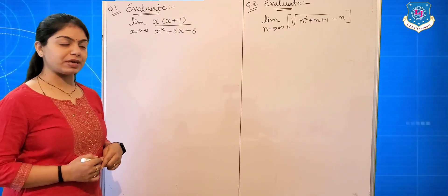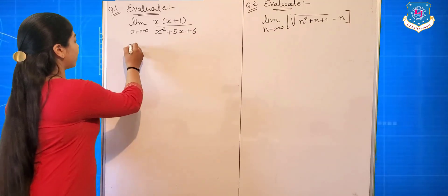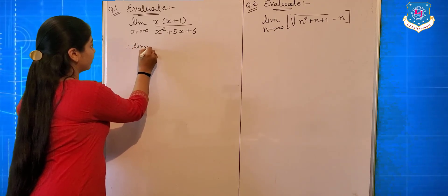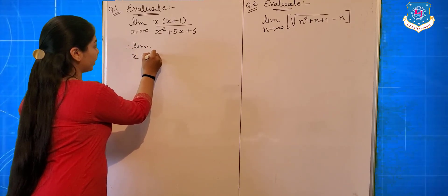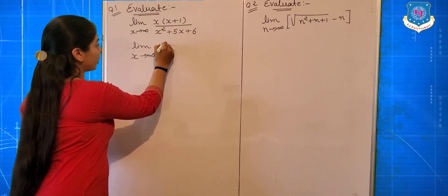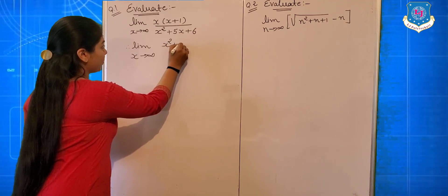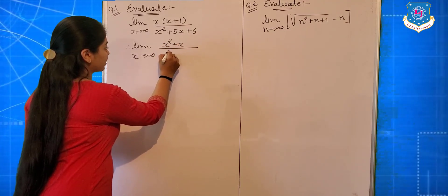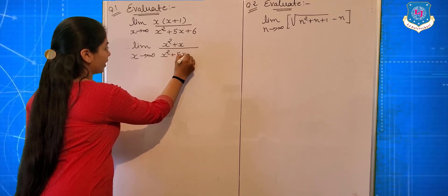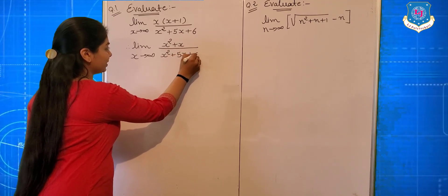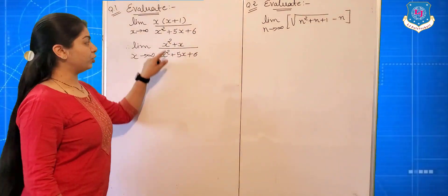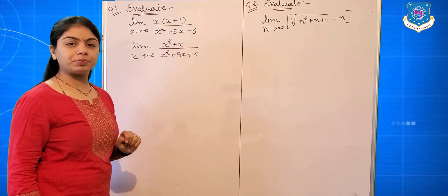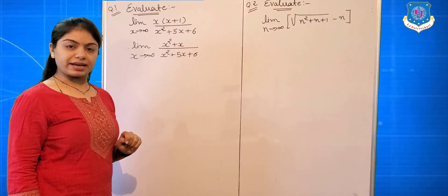So our first step is: limit x tends to infinite of x(x+1) which gives x² + x, upon x² + 5x + 6. Now in the numerator and denominator both, the maximum power is x².